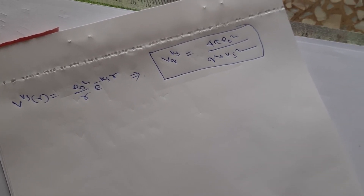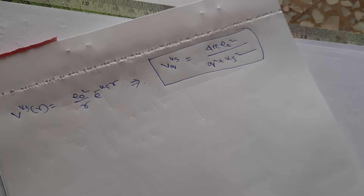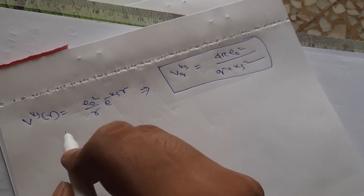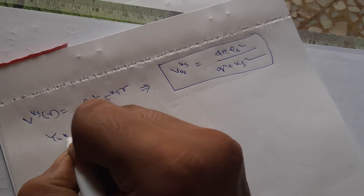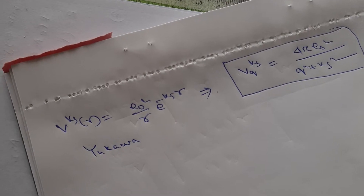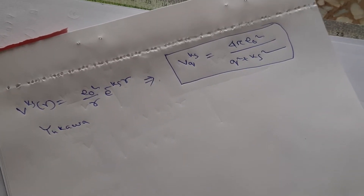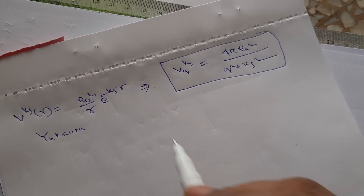In this video we are going to solve another problem from Flensburg. The problem is to find out the Fourier transform of the Yukawa potential, and we need to show that the Fourier transform of this will be a specific expression.